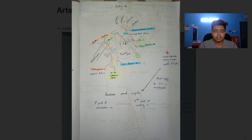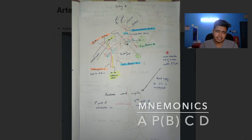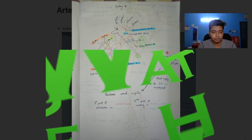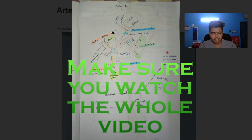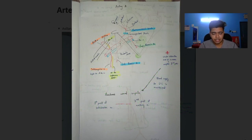The second part gives off two branches. The first one is the thoracoacromial trunk which gives off four branches. It can be remembered as ABCD or APCD: A stands for the acromial branch, P stands for the pectoral branch, C stands for the clavicular branch, and D stands for the deltoid branch.